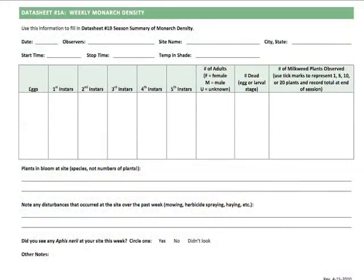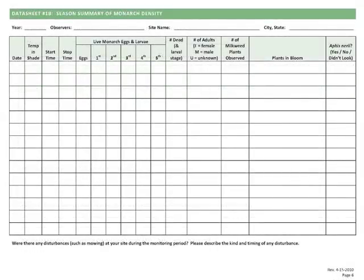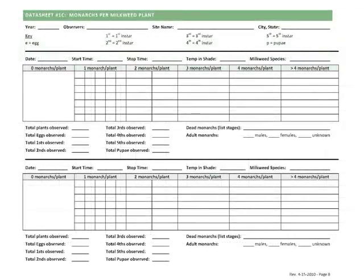Now let's learn how to use the datasheets — this is easier than it sounds. You'll choose a method that works best for you and keep using it. Datasheet 1A only has rows for one date, developed for people who monitor with young children who can't write in the small spaces. Datasheet 1B has rows for several days and summarizes your whole season. Datasheet 1C allows you to keep track of the number of monarchs you observe on individual plants instead of just reporting the total number of plants and monarchs observed.